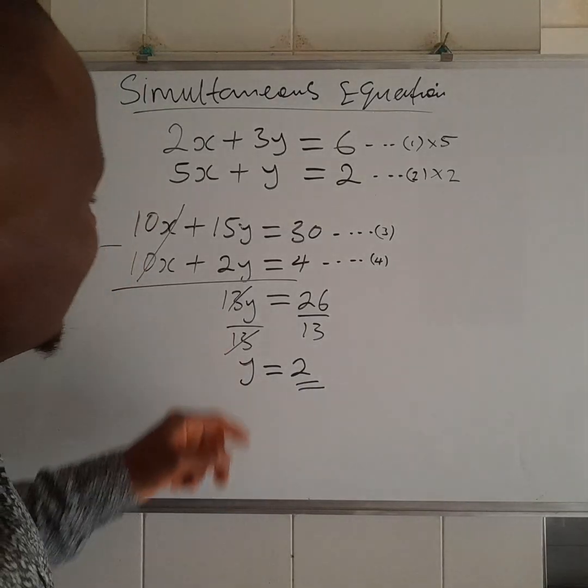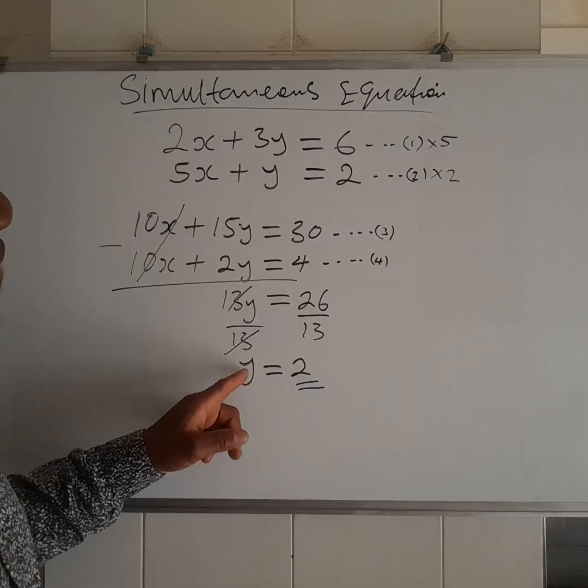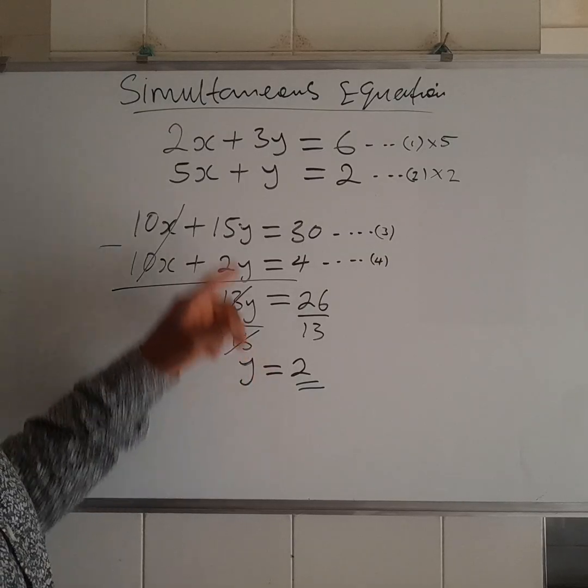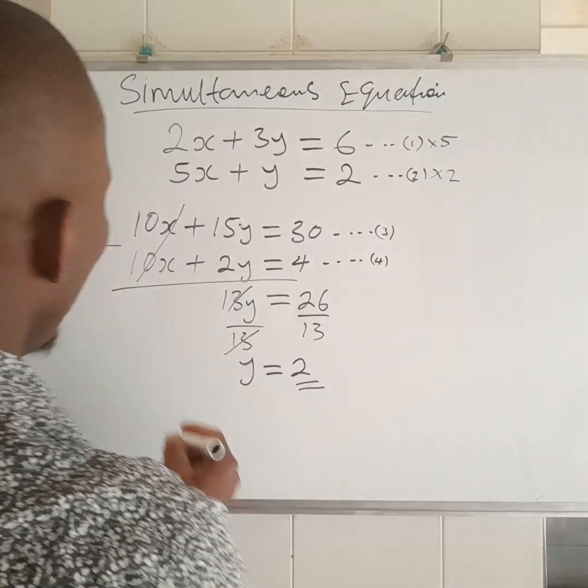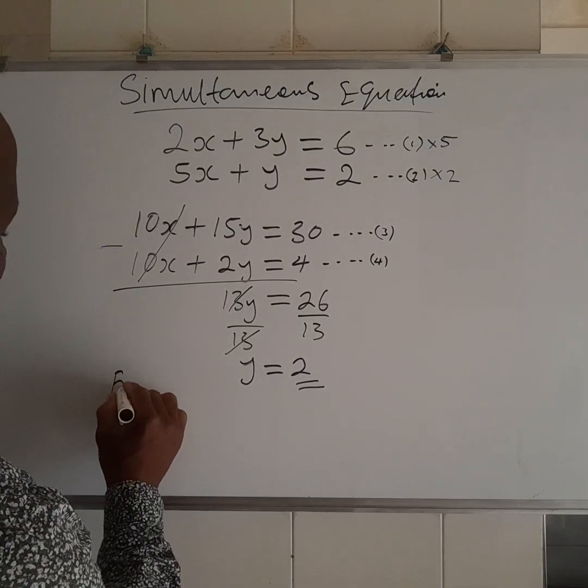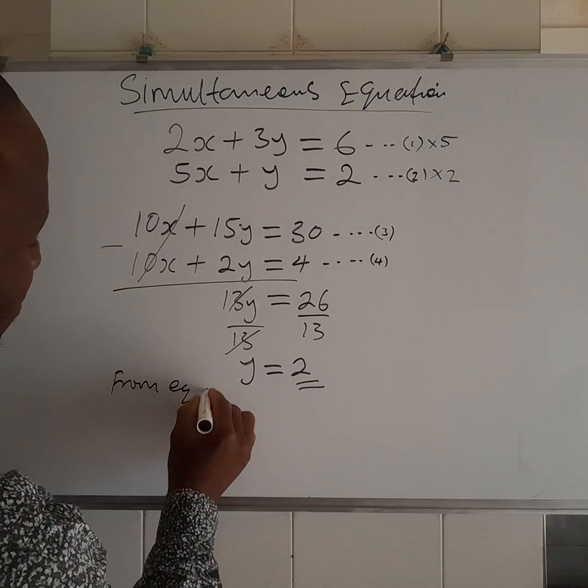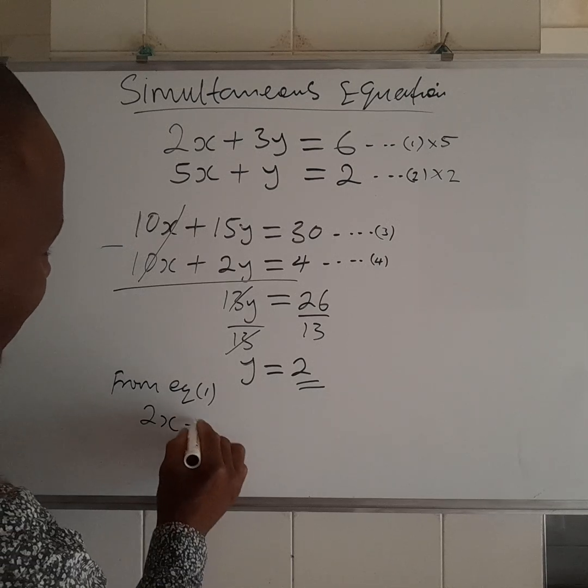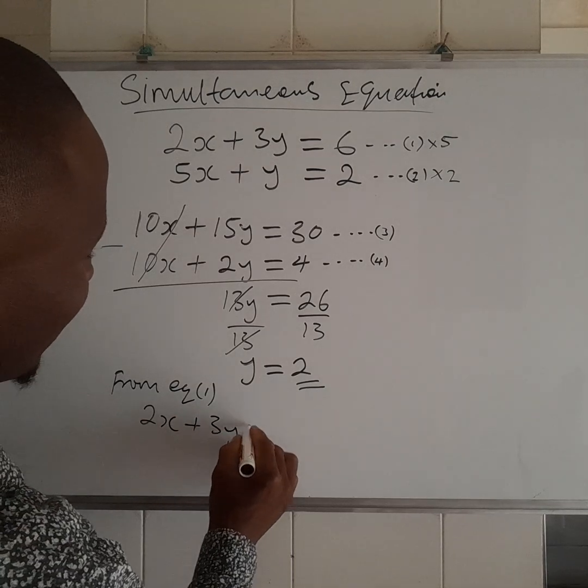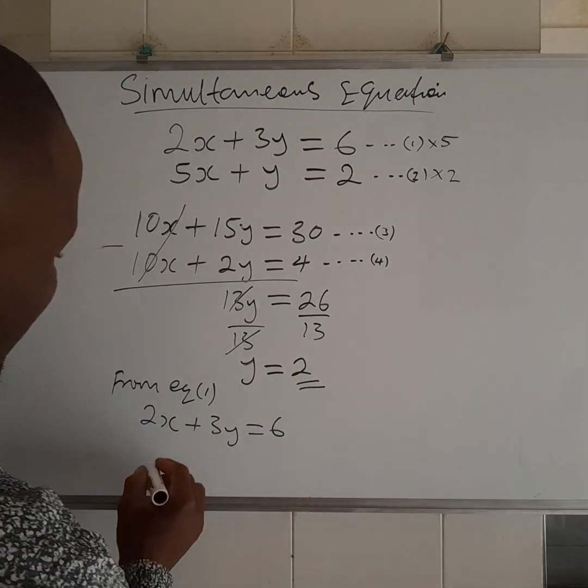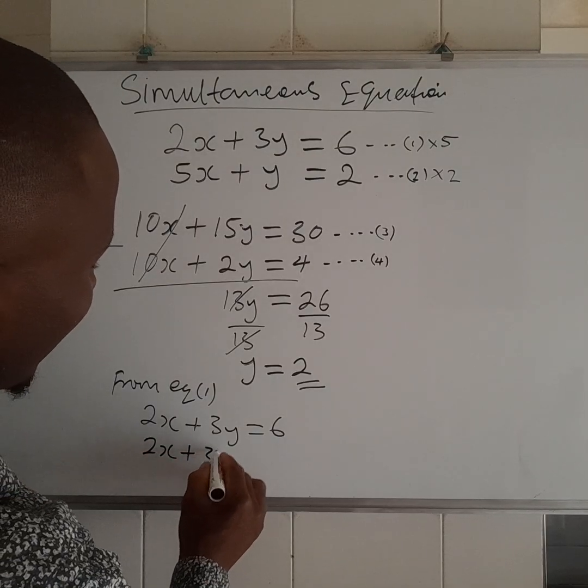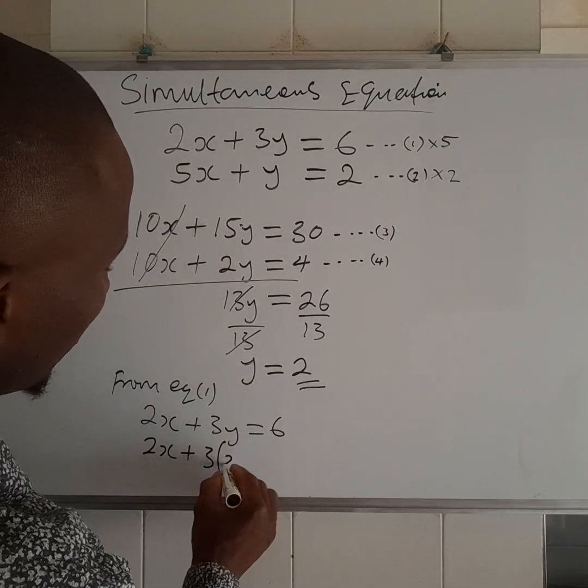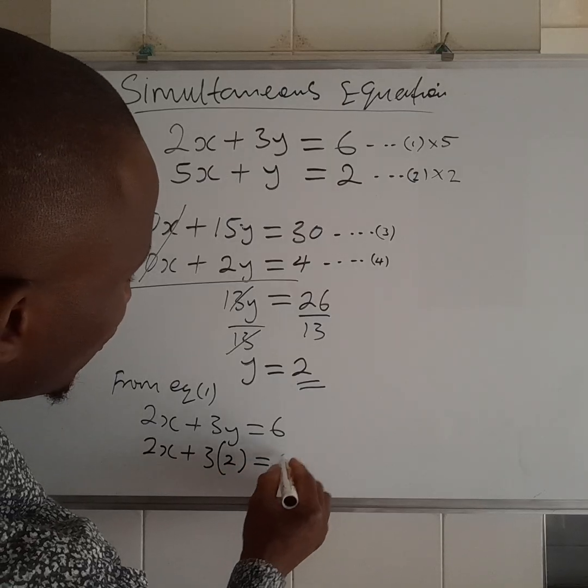So, to get the value of x, you put in the value of y into any of these equations. So, let's choose equation 1. From equation 1, write down equation 1, 2x plus 3y is equal to 6. 2x plus 3, in place of y, put the value of y there, which is 2.